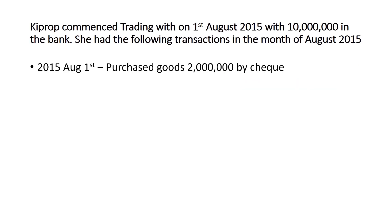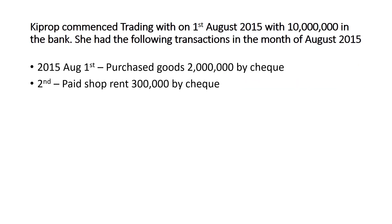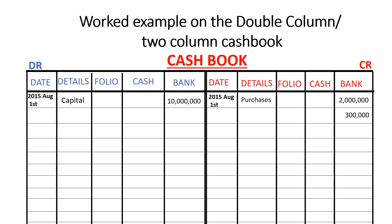Next, shop rent of 300,000 was paid by check. Again, the money in the bank is reducing, so it has reduced by 300,000. We put the 300,000 in the bank column on the credit side of the cash book. The other item affected is rent, and this happened on 2nd August.